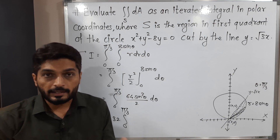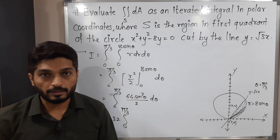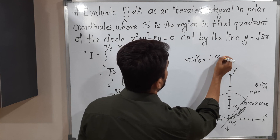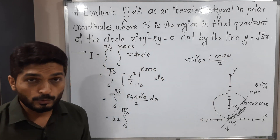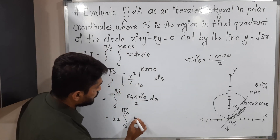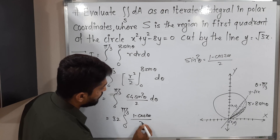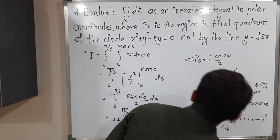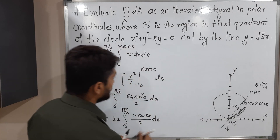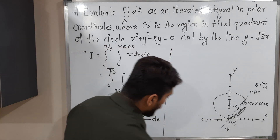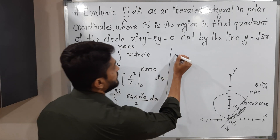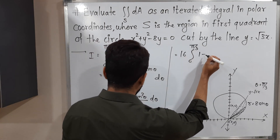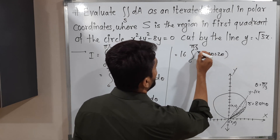We don't have a direct formula for the integration of sin²θ, so we use the trigonometric identity: sin²θ = (1 - cos2θ)/2. Using this: 32 · (1/2) ∫₀^{π/3} (1 - cos2θ) dθ. The 1/2 cancels with 32 to give 16 ∫₀^{π/3} (1 - cos2θ) dθ.